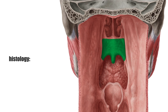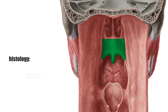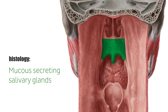The soft palate makes up approximately one-third of the posterior portion of the palate. Its oral mucosal lining is covered with mucus-secreting salivary glands. It has no bony frame and is made up entirely of various muscle fibers.